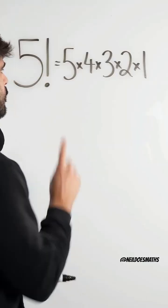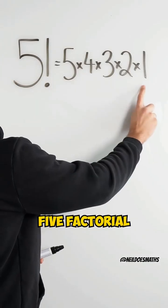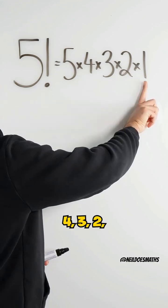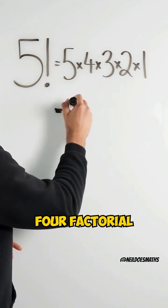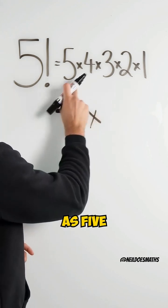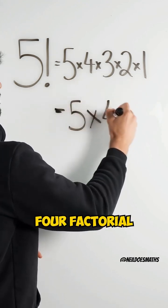Here's five factorial. What do you notice within five factorial? I see four, three, two, one, which is four factorial. So I can rewrite five factorial as five times four factorial.